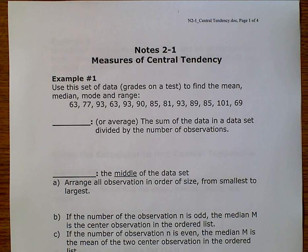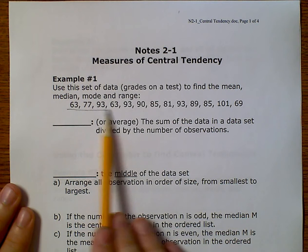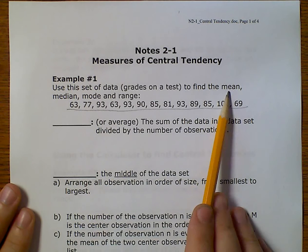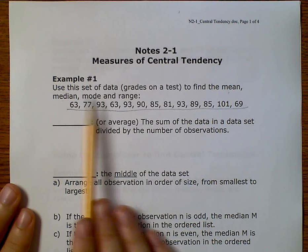Hello, this is Math Models on topic 2-1. We're just going to review the measures of central tendency. Our example one uses a given set of data to find the mean, median, mode, and range.